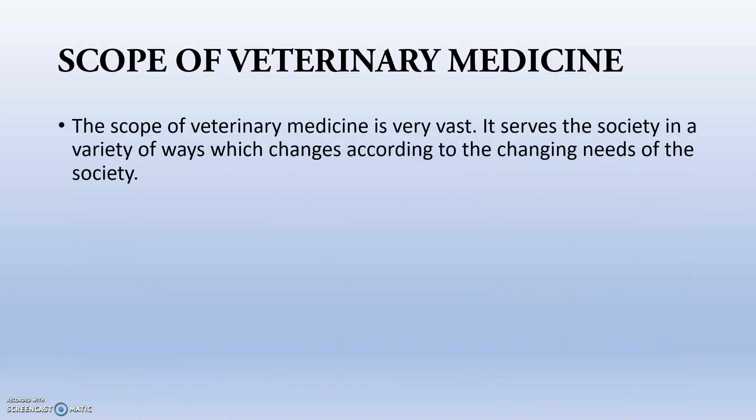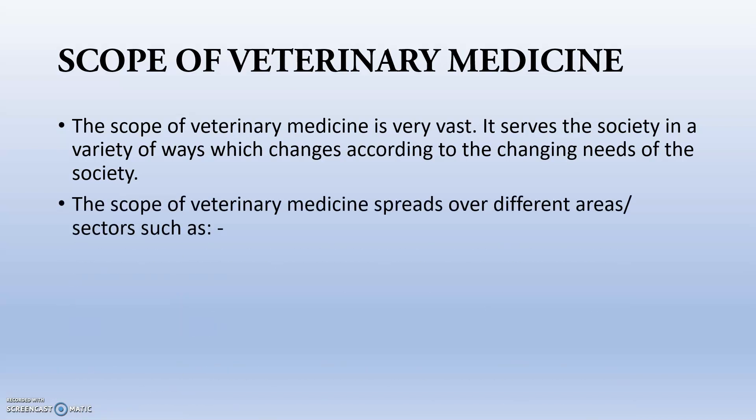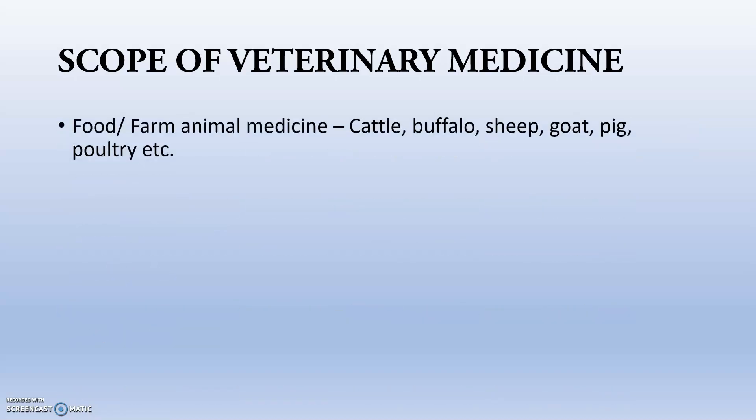Moving to the scope of veterinary medicine — why veterinary medicine is practiced and why new waves of veterinary medicine are emerging. The scope of veterinary medicine is very vast. It serves society in different ways; as society changes, veterinary medicine also changes. One major area is food and farm animal medicine — we use many animals as food items, ensuring healthy, hygienic production processes and no drug residues.